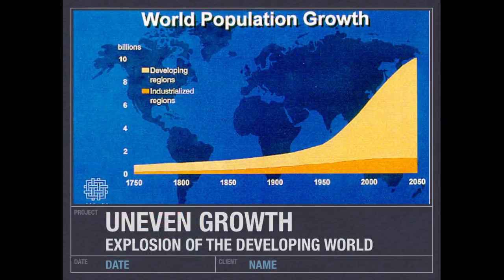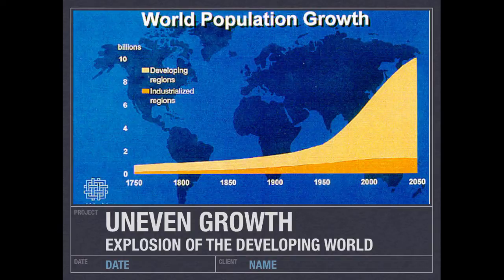The population of the world is currently over 7 billion people and is projected to top out somewhere between 8 and 10 billion people between 2050 and 2100. This graph right here shows you essentially where in the world most of the population growth is supposed to occur. Down at the bottom you'll see that orange chunk representing the industrialized world or developed nations, and the yellow sitting on top represents developing nations or third world countries.